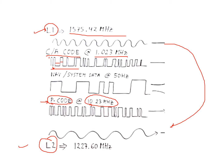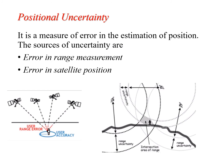These frequencies are modulated and each code carries its own message. The message modulated over these codes is called the NAV message (navigation message), and it has a frequency of 50 Hz. A lower frequency is used for the NAV message because it ensures the message is clearly understood.